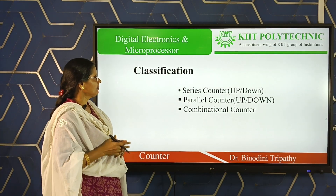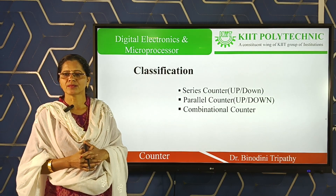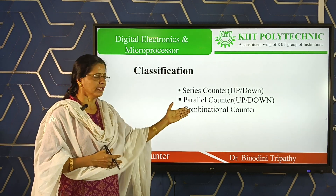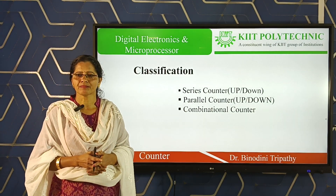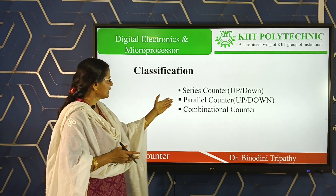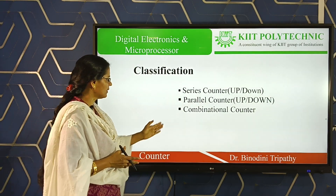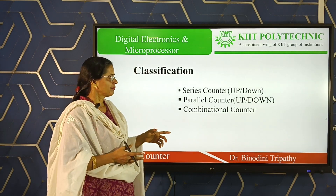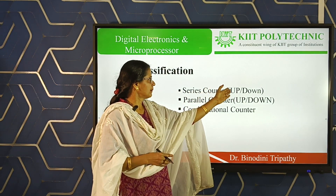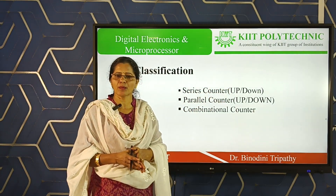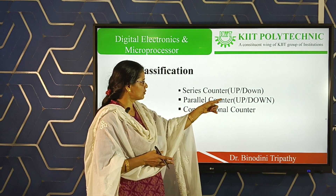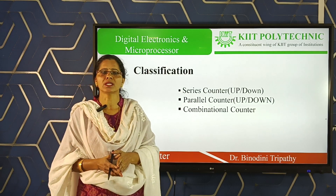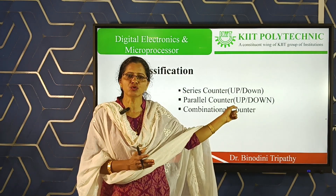This is about the classification of counter. The counter can be broadly classified into three classes: one is series counter, another is parallel counter, and the third is a combination counter. A series counter can again be divided into two classes: up counter and down counter. Parallel counter can also be divided into up counter and down counter. The combination counter is something different from the two standard forms.